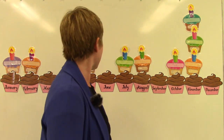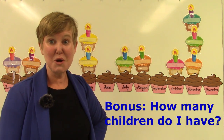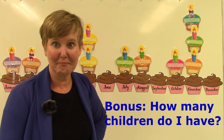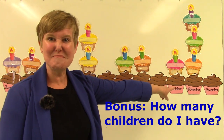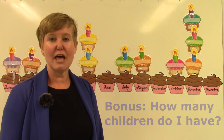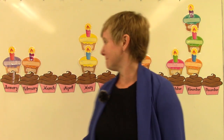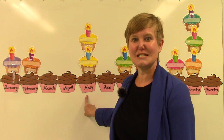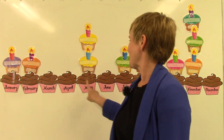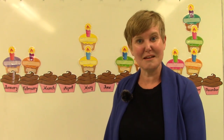Now let's take a look at this graph. Can you see which month has the most birthdays? It's November — there are three birthdays in the month of November. And then which month has the next most? It is the month of May. January, February, March, April, May — Jenny and Lizzie's birthdays are both in May.